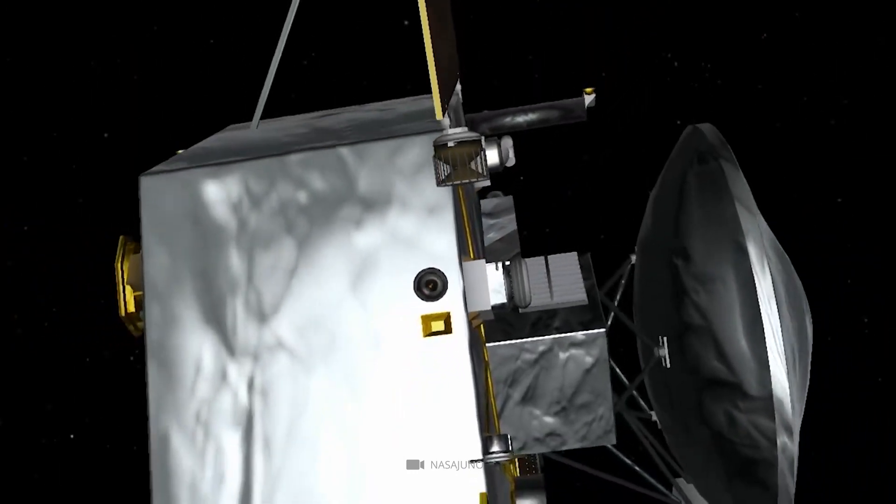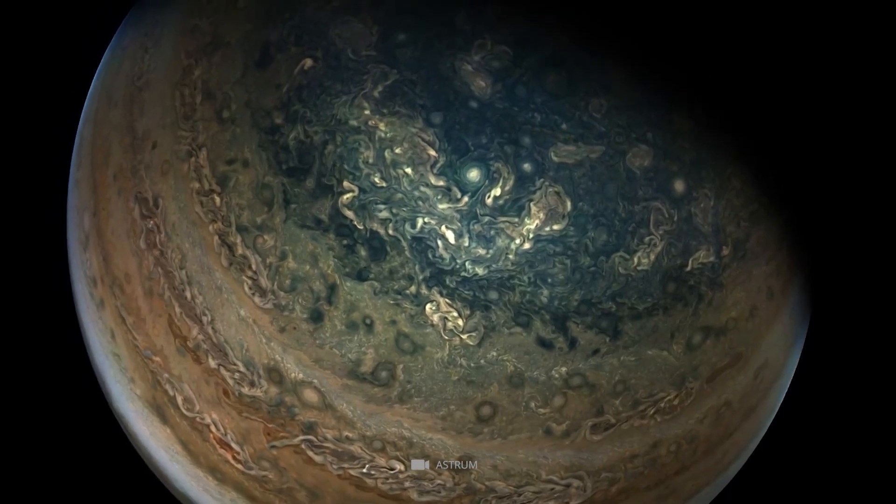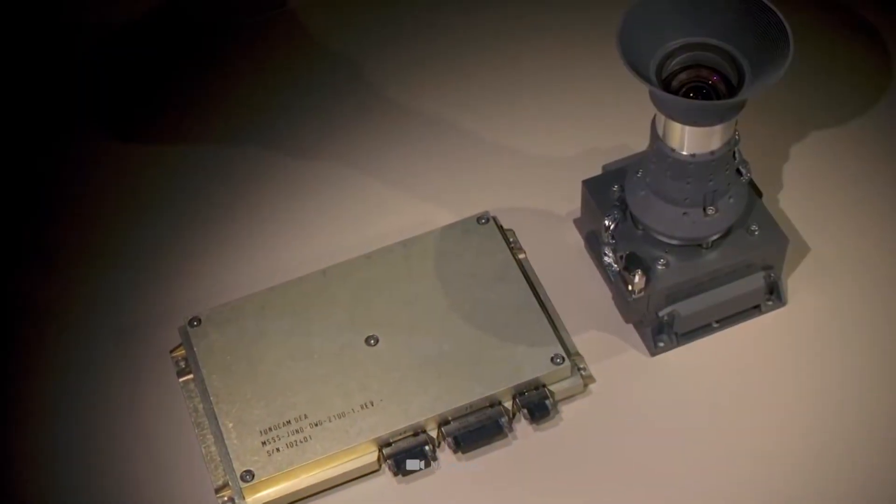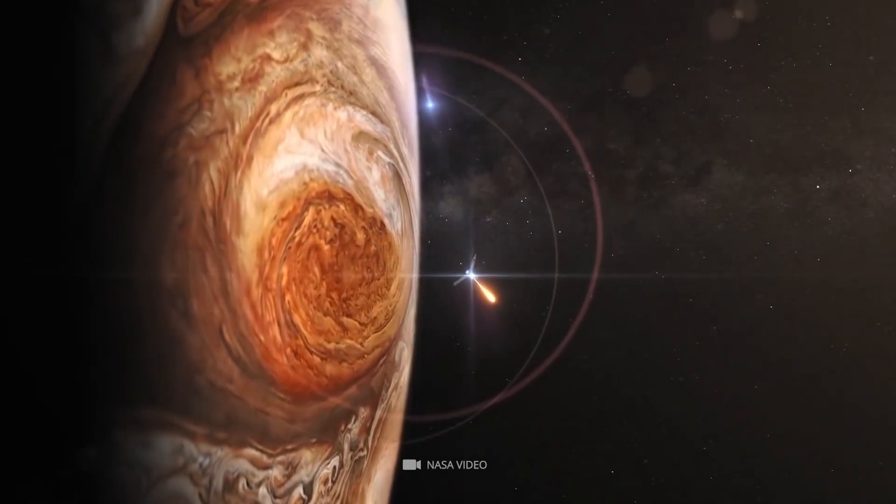Juno also had JunoCam, a special visible light camera telescope to capture the best pictures of Jupiter. The camera has given us some of the most stunning images of the planet, unraveling many secrets of the behemoth planet.